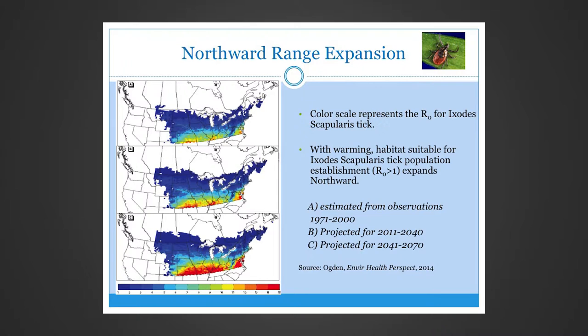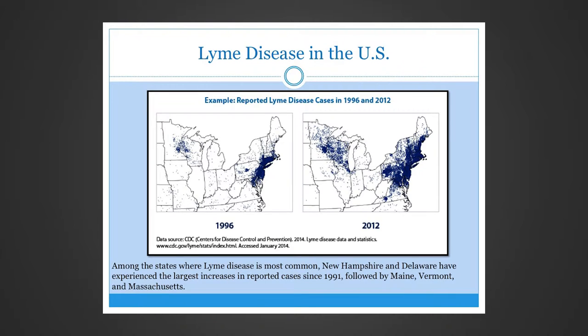This slide depicts continued northward expansion of the Ixodes scapularis tick into Canada due to rising global temperatures. The color scale represents the basic reproductive number. Image A shows estimated observations from 1970 to 2000; B is projected for 2011 to 2040, with the region expanding northward; and C is projected for 2040 to 2070. In the United States, Lyme disease increase has been predominantly in northern regions, with New Hampshire and Delaware experiencing the largest increases, followed by Maine, Vermont, and Massachusetts.